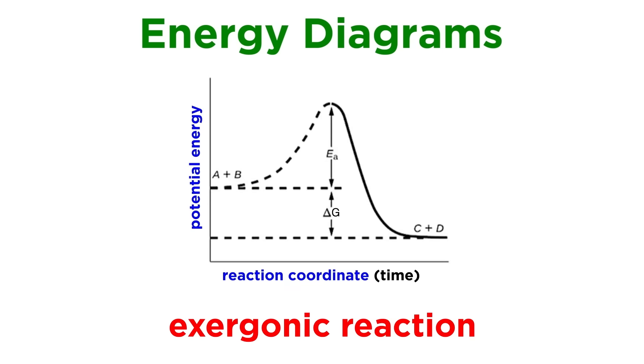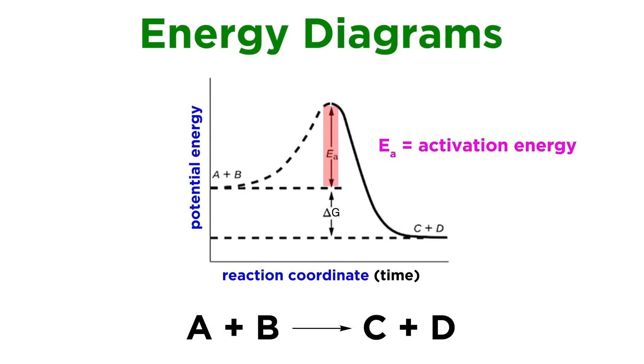Depicted here is an exergonic reaction. We have reactants on the left, and then energy climbs up all the way to the peak, which is the transition state, and then drops down to the products, which sit lower than reactants.